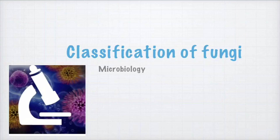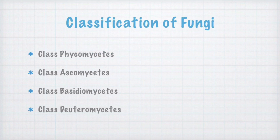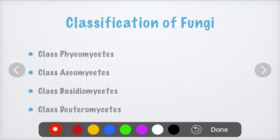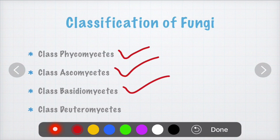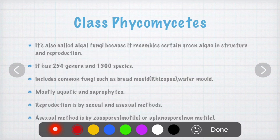Fungi are classified into four classes: class Phycomycetes, class Ascomycetes, class Basidiomycetes, and class Deuteromycetes. First we will see class Phycomycetes, which is also called algal fungi.